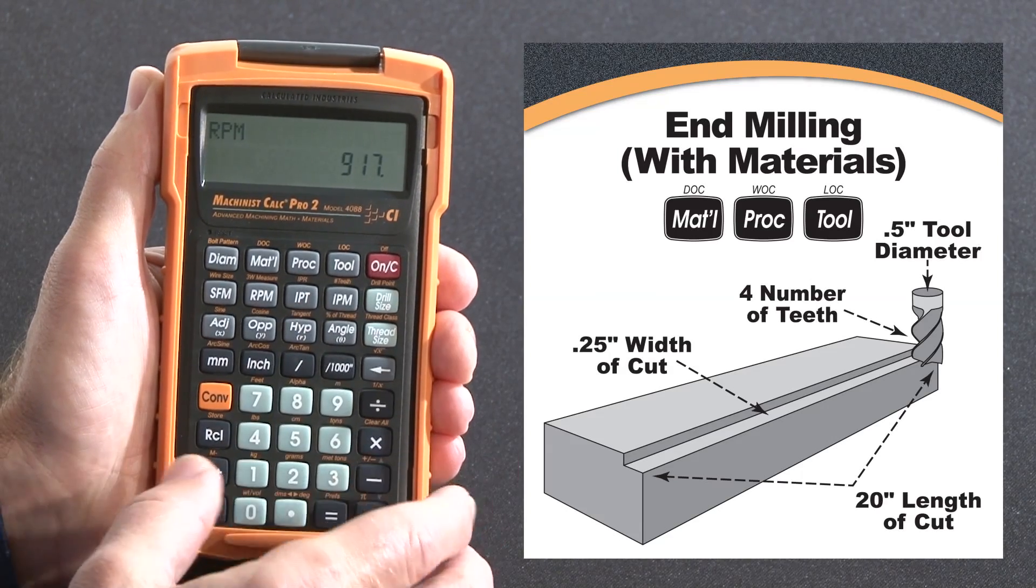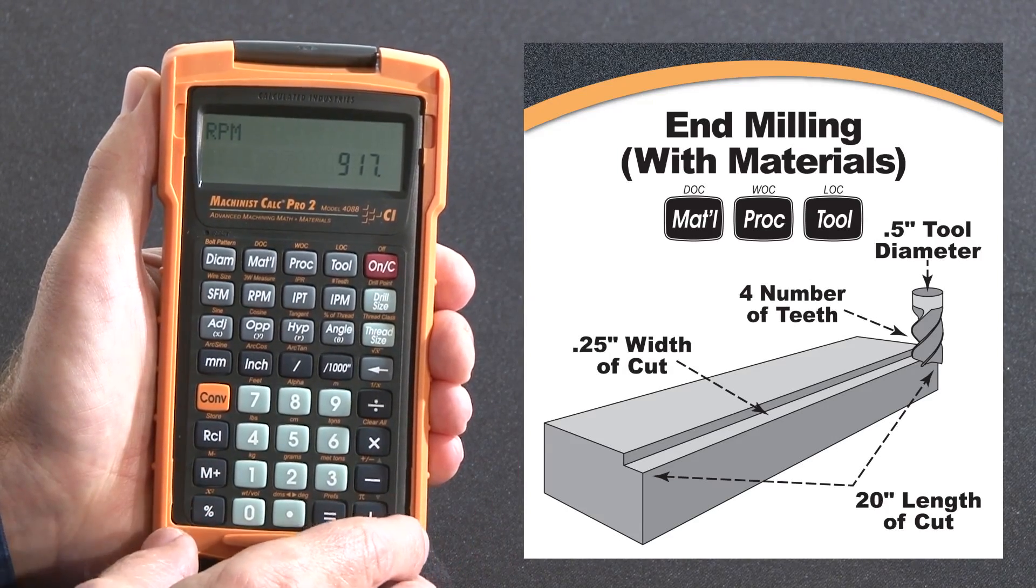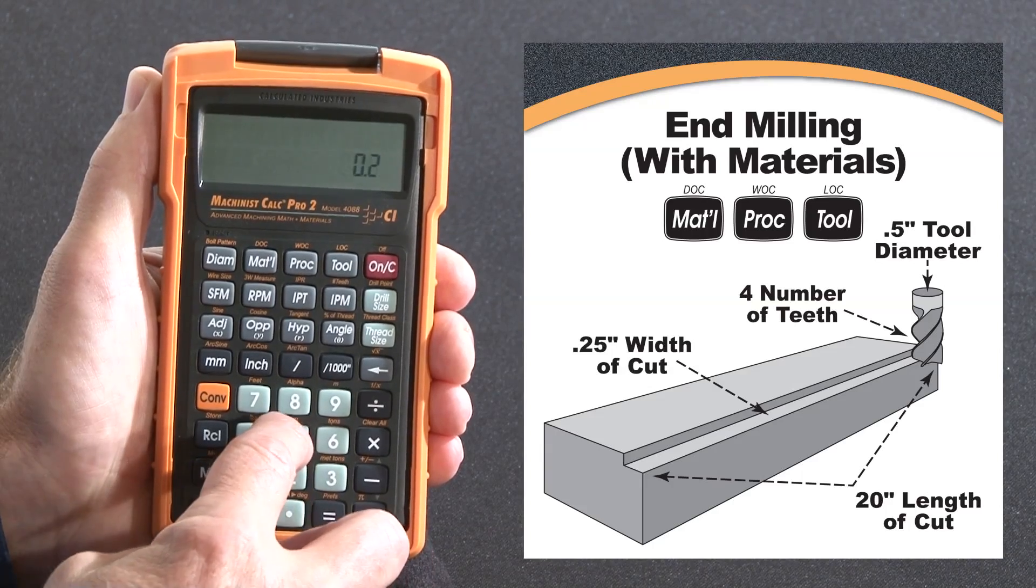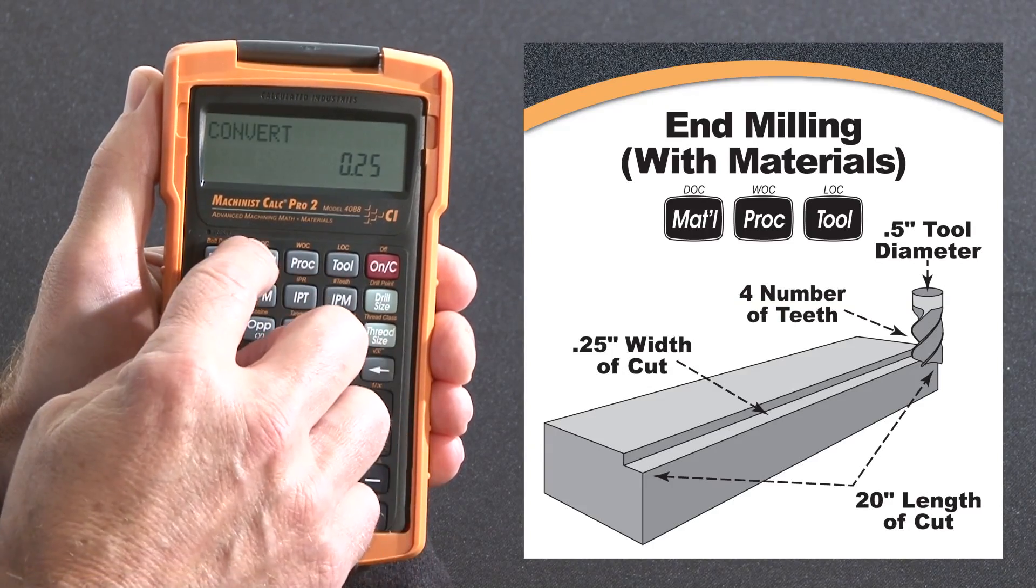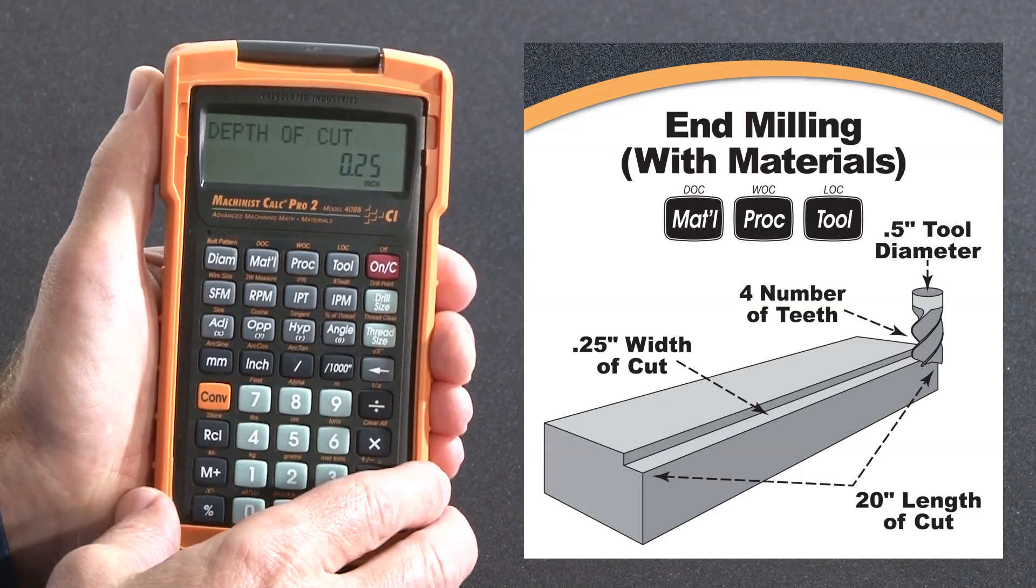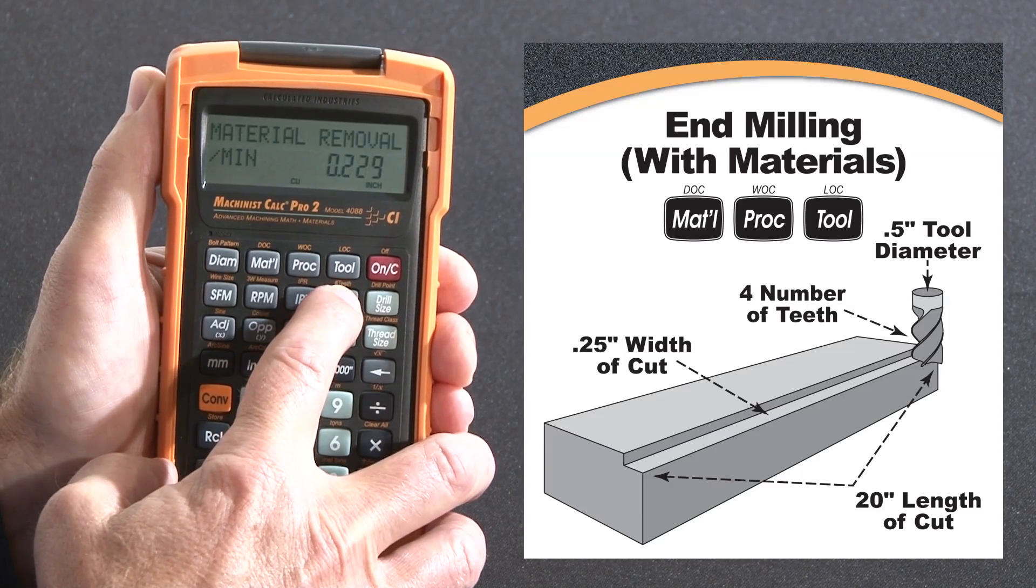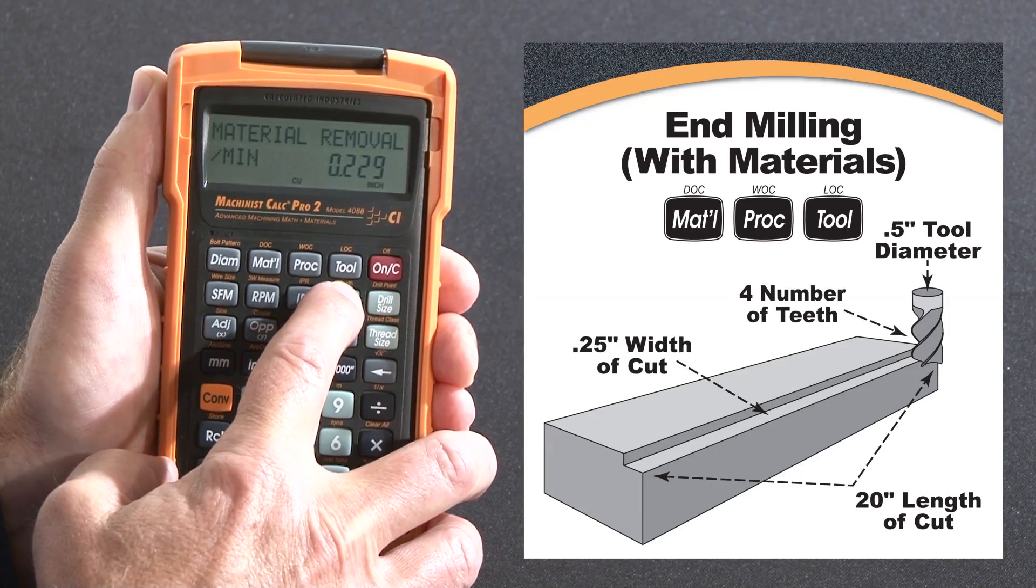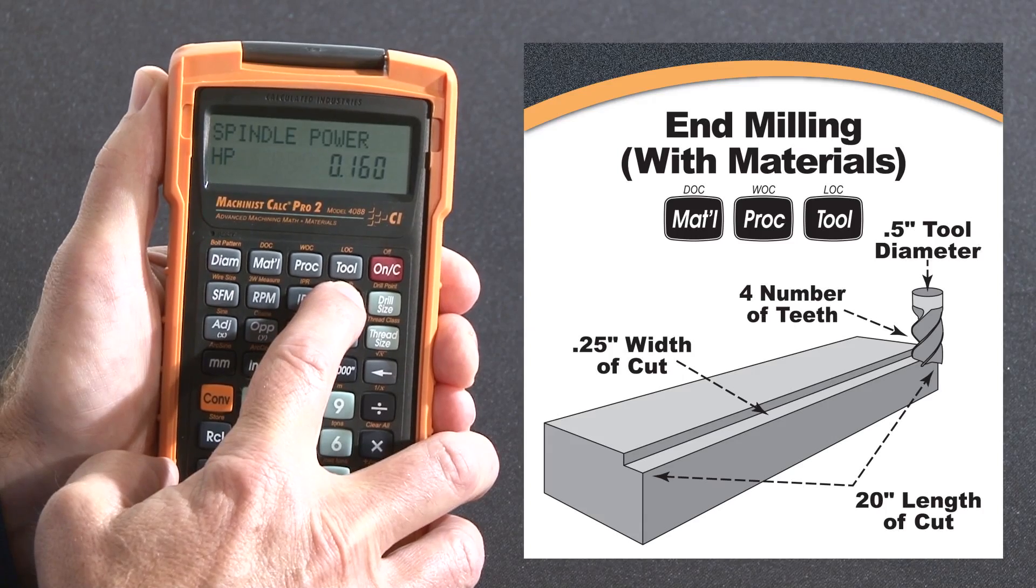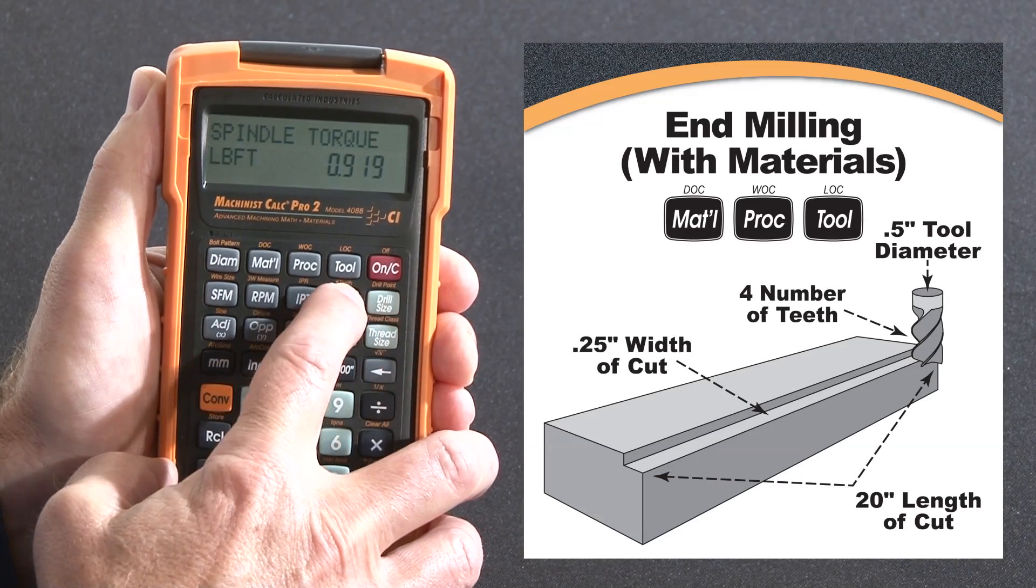Now if I like, I can enter a depth of cut and get even more information. We put quarter inch depth of cut. Now I'm going to also get material removal rate, the spindle horsepower required, and the torque requirement.